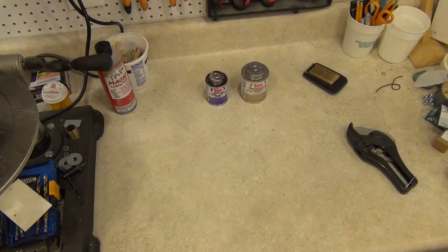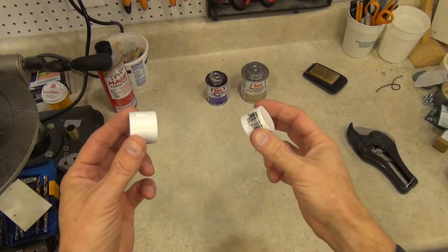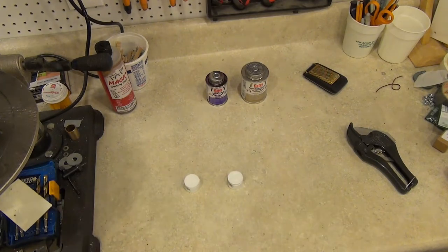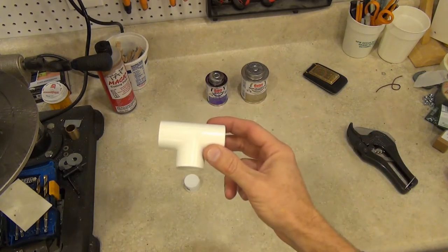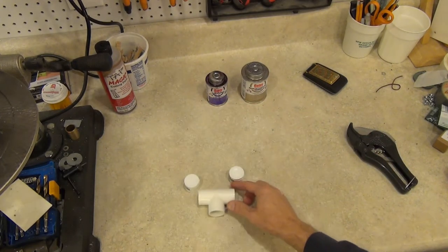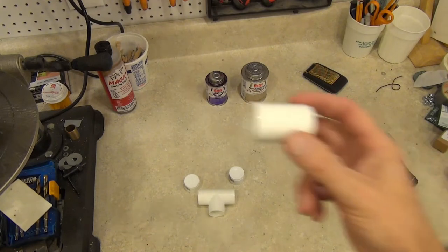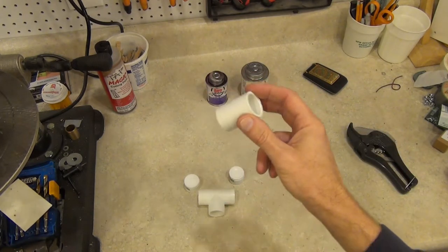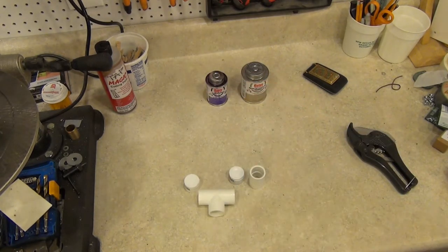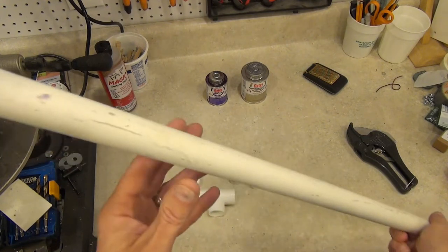Here's how you can make one out of three-quarter inch PVC fittings and pipe. You just need two end caps, a T, a straight coupler, and a few feet of three-quarter inch PVC pipe.